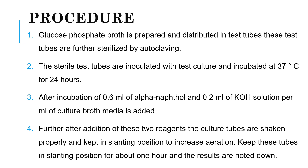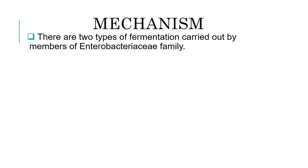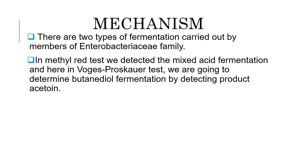After 1 hour, you have to note down the result. Now let's see the mechanism in detail. There are two types of fermentations carried out by members of Enterobacteriaceae family. In methyl red test, we detect mixed acid fermentation, and here in Vogel's Prosquer test, we are going to determine butanidoyl fermentation by detection of the product, that is acetoin. In VP test, we are going to determine the production of acetoin.